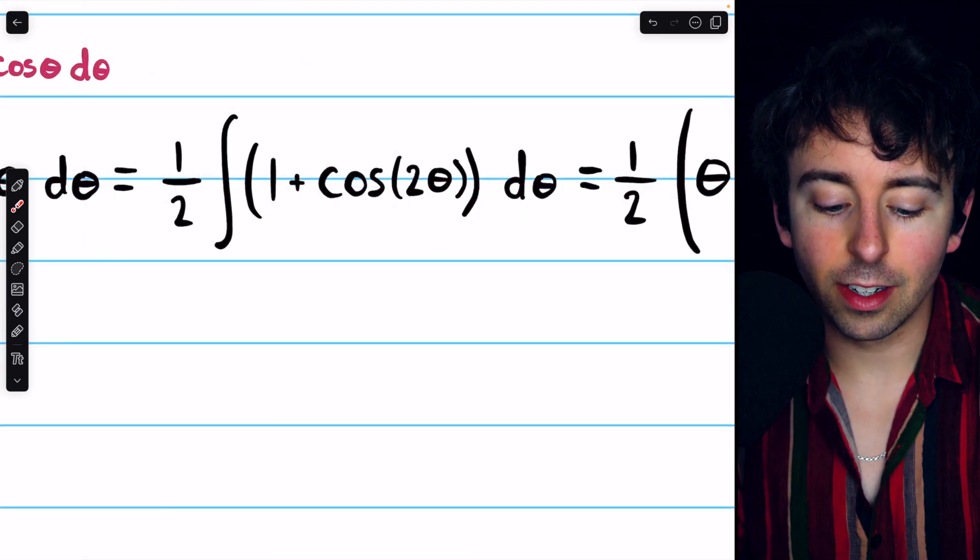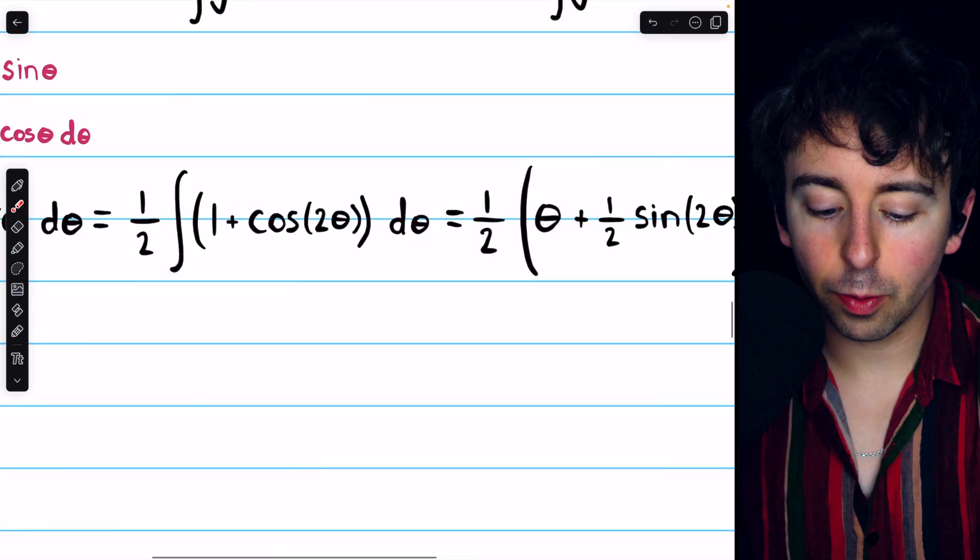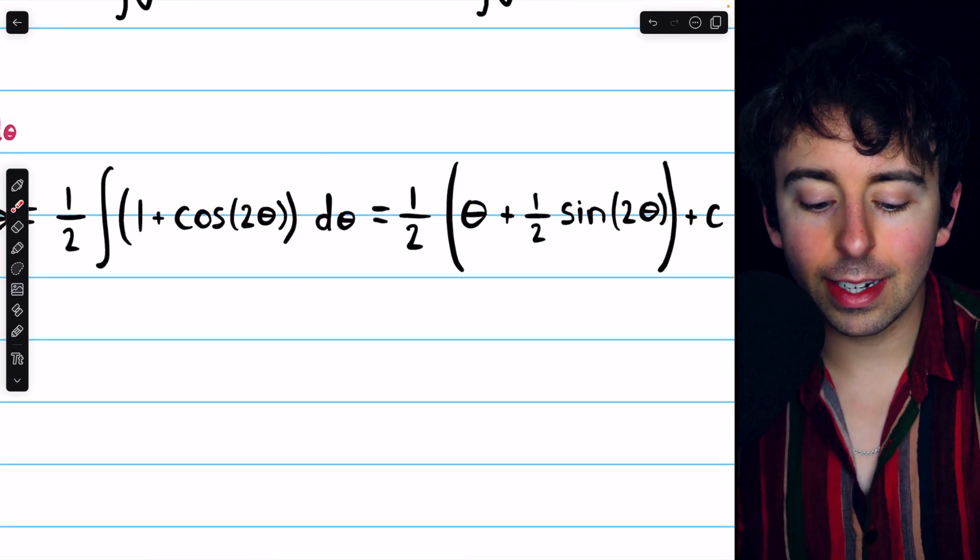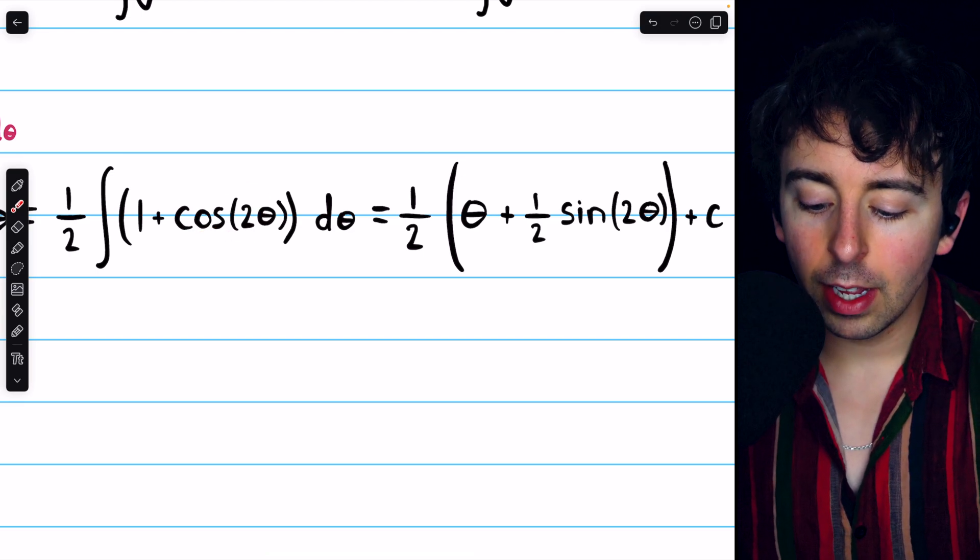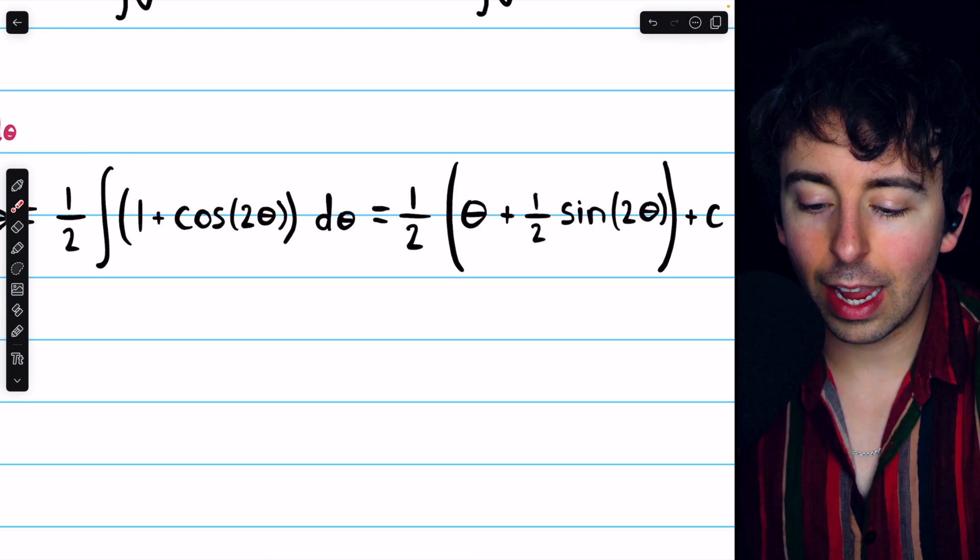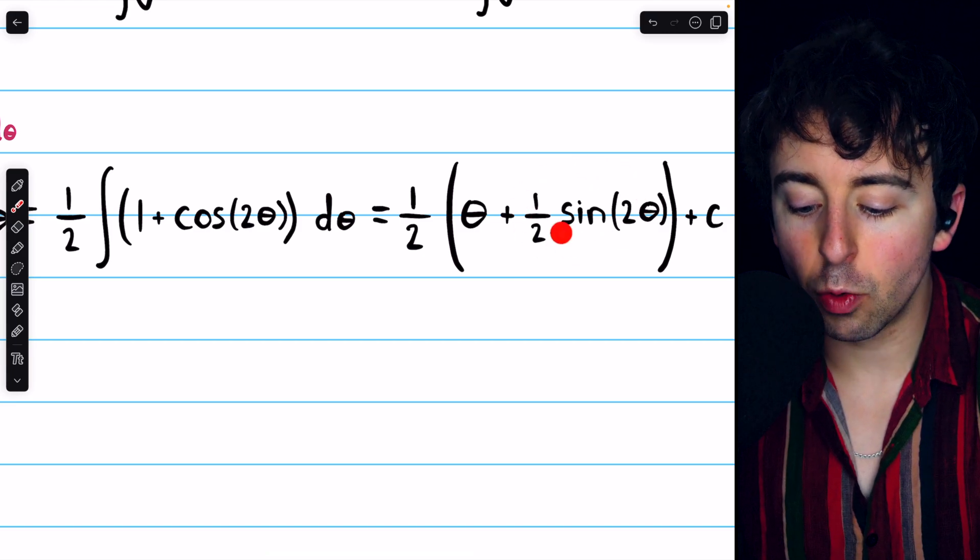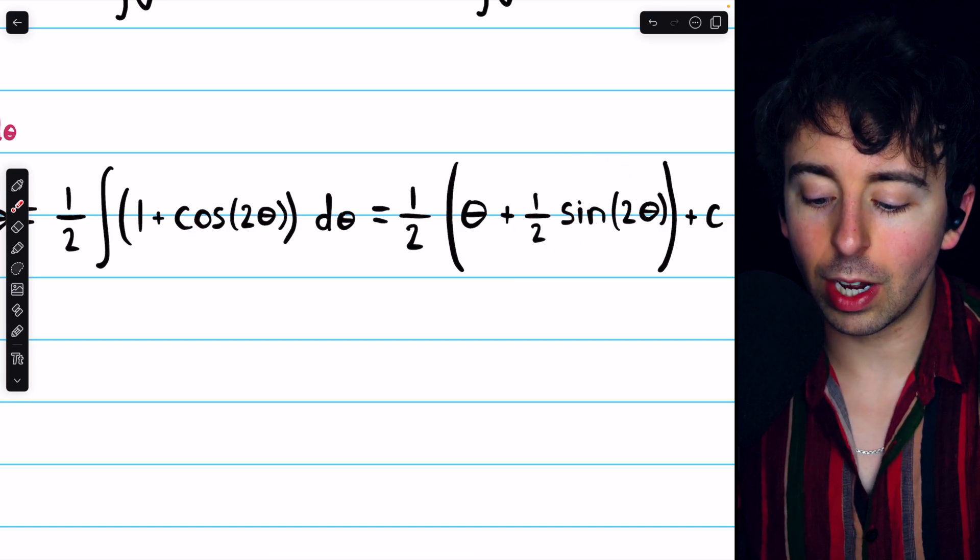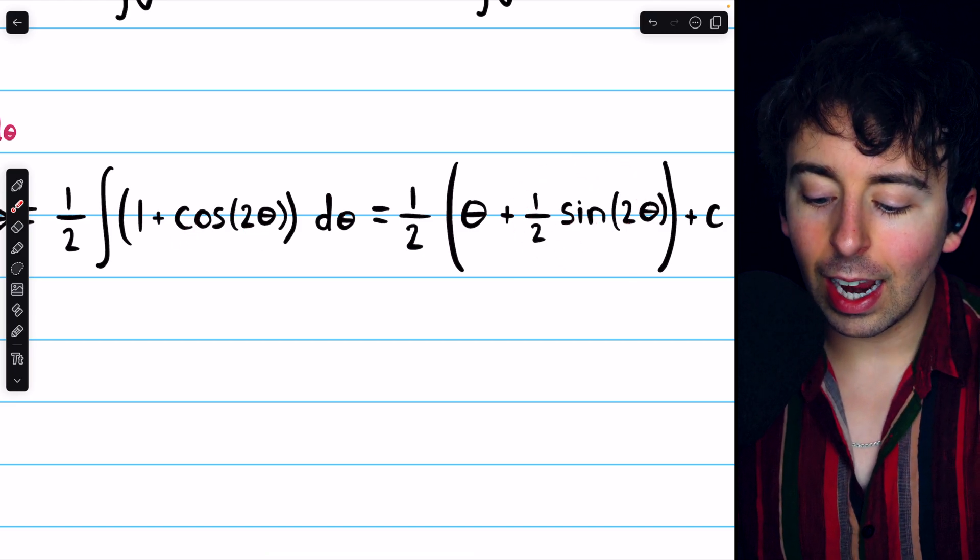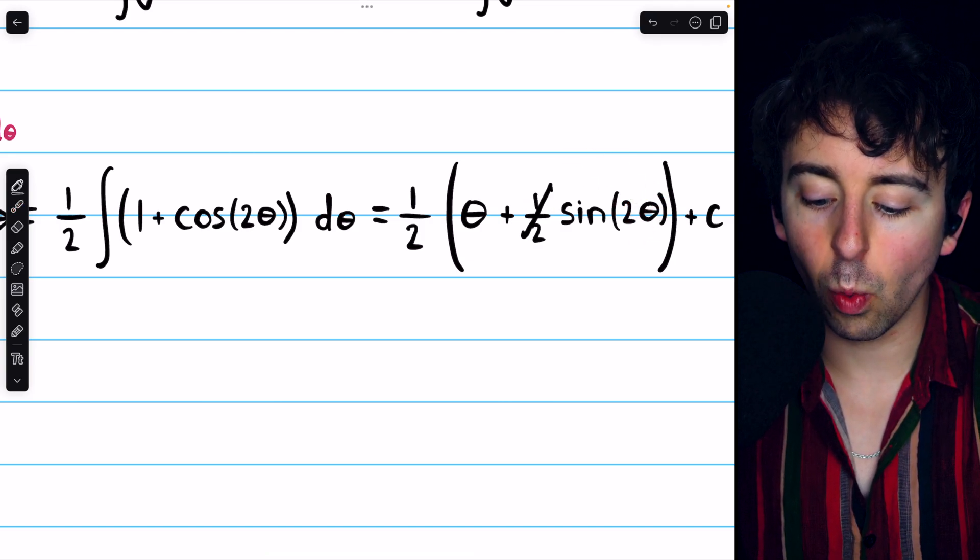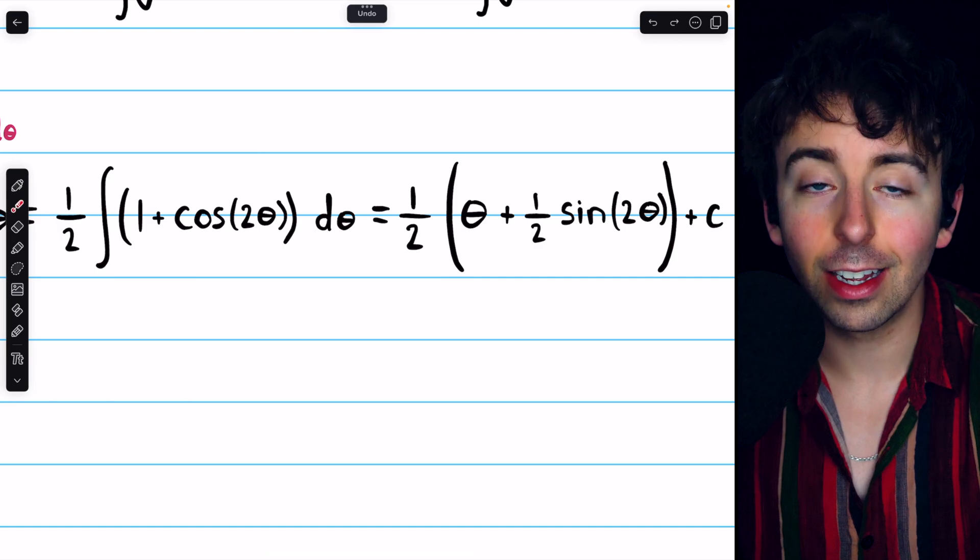Now, this is straightforward to integrate. We just have the 1 half out front, and then the integral of 1 is theta, and the integral of cosine 2 theta is 1 half sine 2 theta. Note how if we took the derivative of this second term, the derivative of sine is cosine, we'd have the 2 theta inside. And then the chain rule would give us a factor of 2, which would cancel out with the 1 half. So this integral is correct.